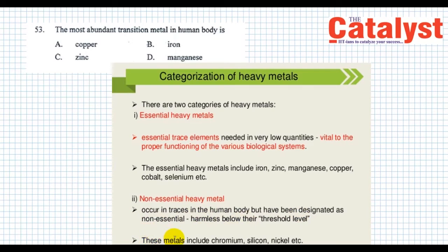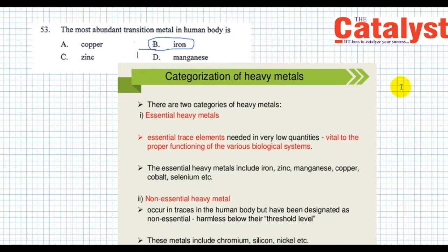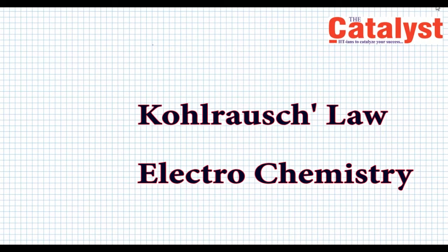Blood is the most important body fluid of the human body, which consists of hemoglobin—a red protein responsible for transportation of oxygen in the blood and imparts red color to the blood. The most abundant transition metal in the human body is iron, option B.